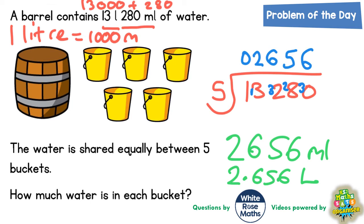Which you could of course write on each bucket 2.656, 2.656, 2.656, 2.656 and they're all in litres. So we don't forget to put the L on the end.